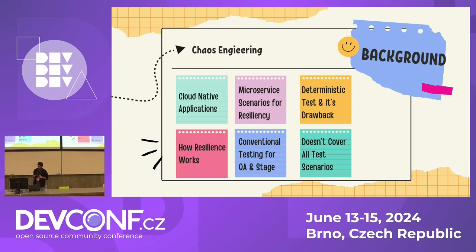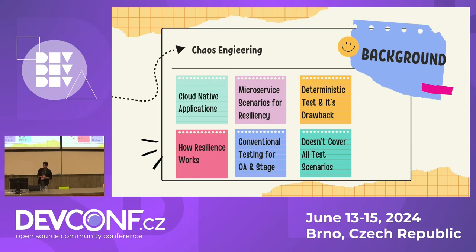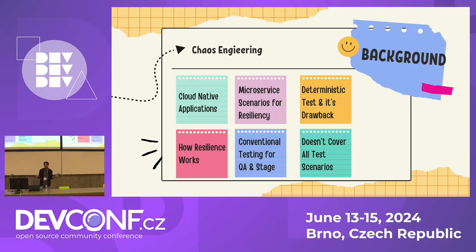Let me take an example. We do conventional testing in QA, UAT, staging — but as I said, it doesn't cover all the scenarios. For example, let's say you have a microservice with five services communicating via SSE or WebSocket. If your pod gets crashed and you are connected with SSE, whatever data you are consuming might get lost. So there are a few scenarios like this that deterministic testing won't cover.